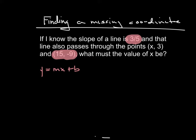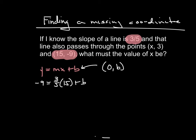Why don't I know b? Well, b is the coordinate pair (0, b), and unfortunately none of these points come as (0, b), so I'm out of luck there. So I'm going to plug in: y = -9, m = 3/5, x = 15. That leaves an equation with just b. So: -9 = (3/5)(15) + b. Mentally, 15 divided by 5 is 3, times 3 gives you 9. So -9 = 9 + b. Subtract 9 from both sides: -18 = b.